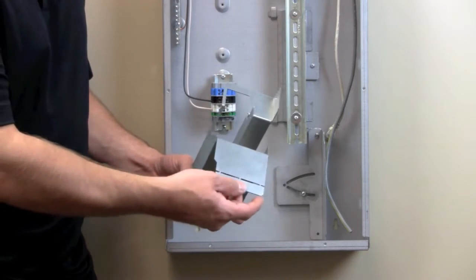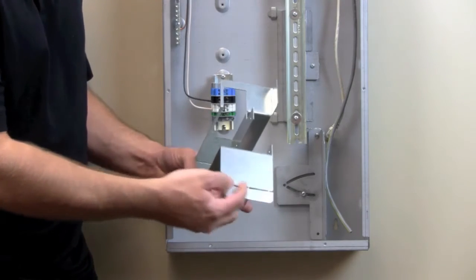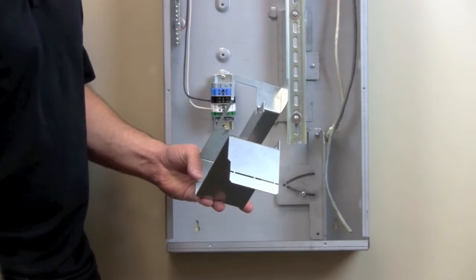With the two slot, you will bend this piece right here at the score line so it will fit in the two slot.